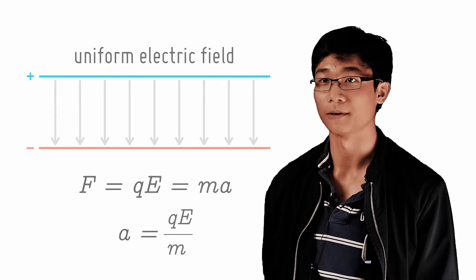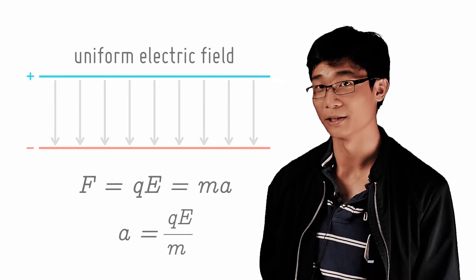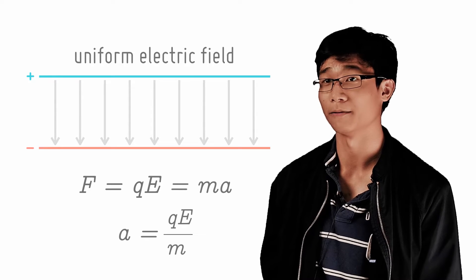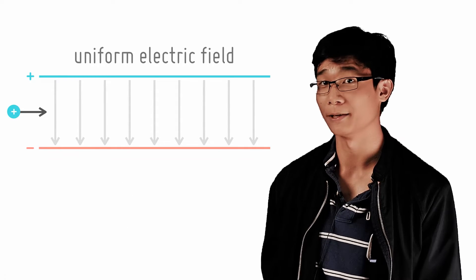Thus, we can solve for the motion of a charged particle with any initial velocity by splitting the velocity in the direction of the electric field and perpendicular to it.